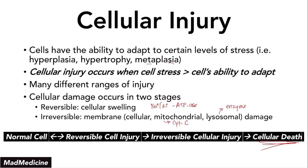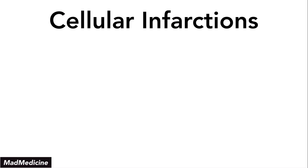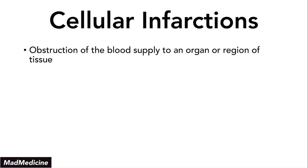That is the central dogma of cellular injury. Now we're going to talk about infarctions because they are very high yield topics, especially when it comes to different organ systems — not only the heart, but also the kidney, the liver, and the GI system. When it comes to cellular infarctions, an infarction is essentially the obstruction of a blood supply to an organ or a region of the organ.